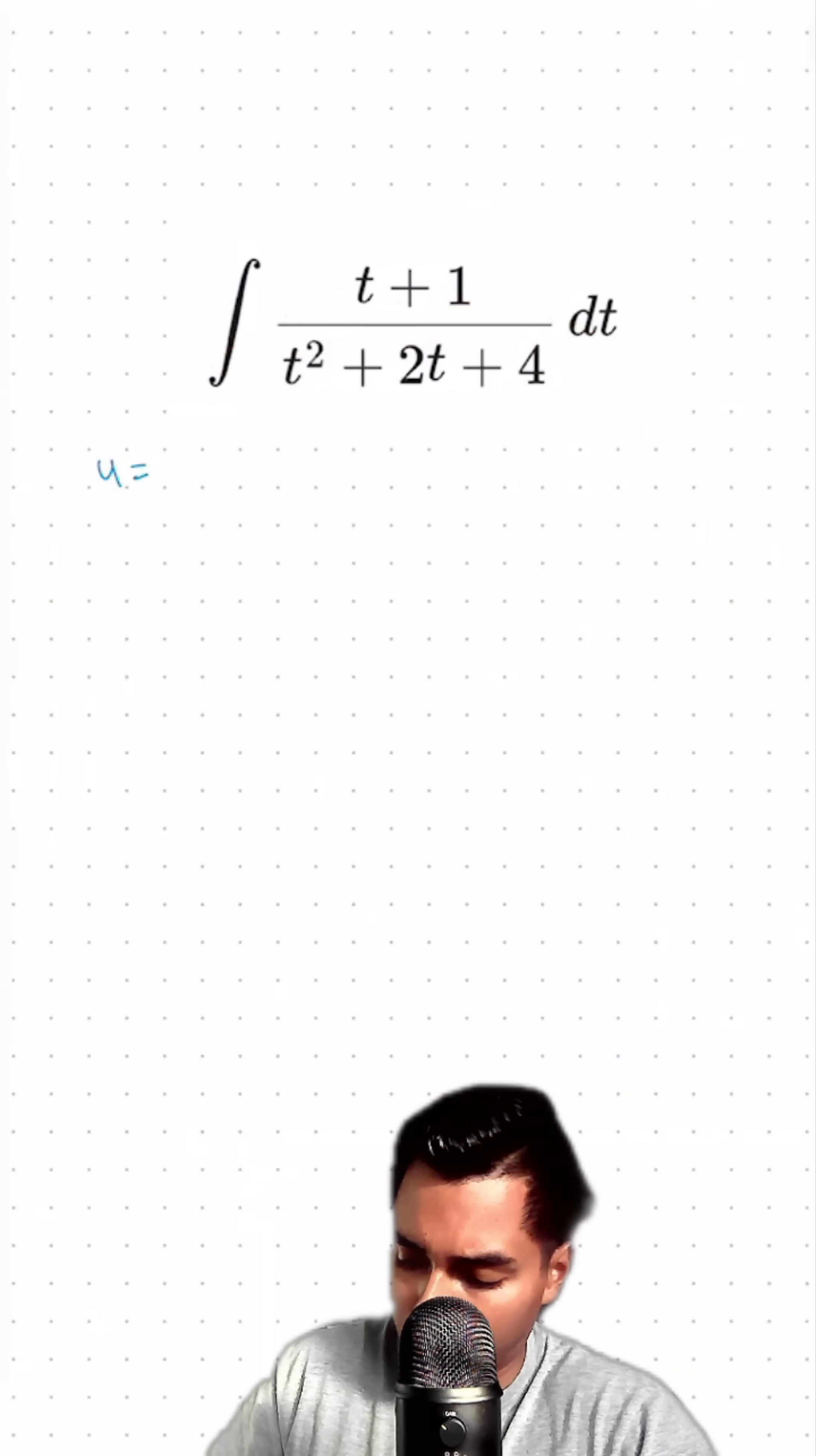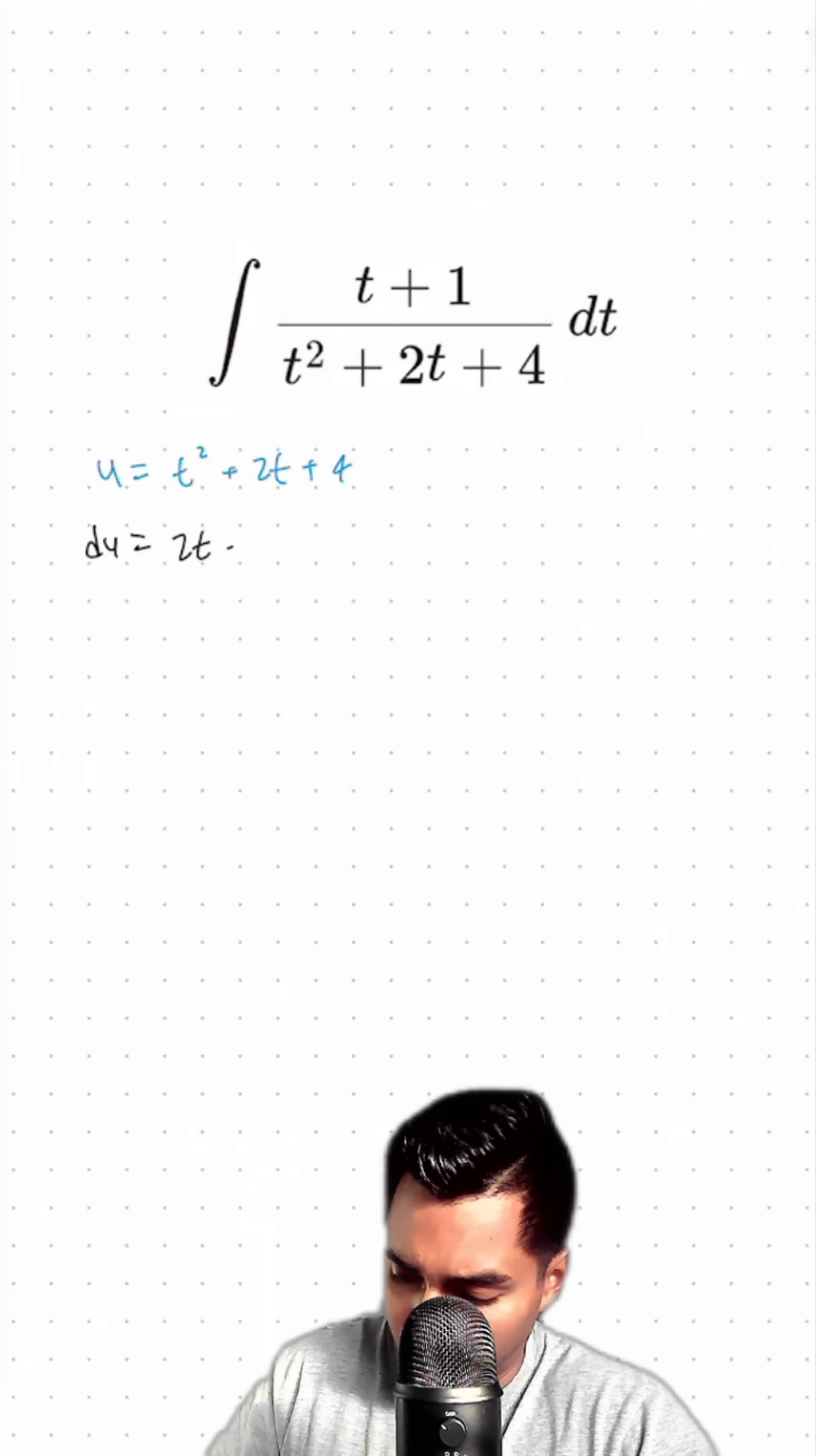I'm going to set u equal to the denominator t squared plus 2t plus 4. Take that derivative, du is equal to 2t plus 2 dt.